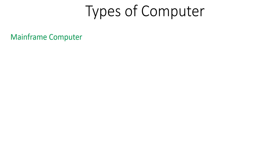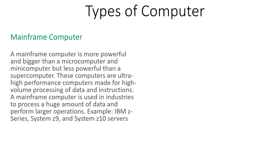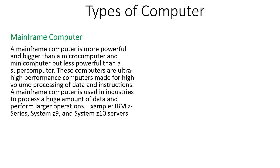The next is the mainframe computer. Mainframe computer is more powerful and bigger than the micro and mini computer but less powerful than the super computer. These computers are ultra high performance computers made for high volume processing of data and instructions. A mainframe computer is used in industries to process a huge amount of data and perform large operations.